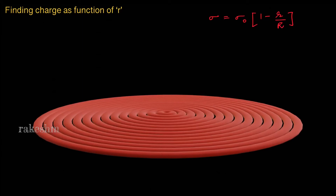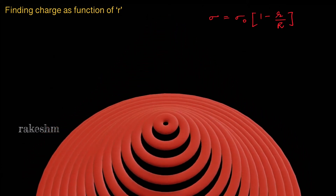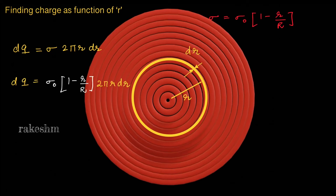Consider a ring of radius r and thickness dr. The charge dq on this ring equals the charge density sigma times the area of the ring. The area is the circumference 2*pi*r times the thickness dr. Writing sigma as sigma_0 (1 - r/R) and expanding, we get dq = sigma_0 * 2*pi * (r*dr - r²/R * dr).